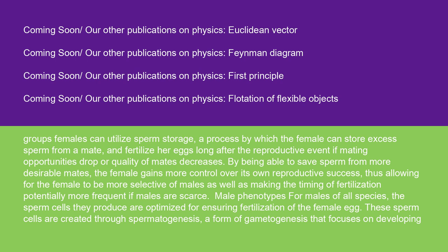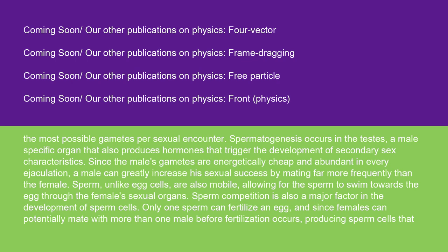Male phenotypes: for males of all species, the sperm cells they produce are optimized for ensuring fertilization of the female egg. These sperm cells are created through spermatogenesis, a form of gametogenesis that focuses on developing the most possible gametes per sexual encounter. Spermatogenesis occurs in the testes, a male-specific organ that also produces hormones that trigger the development of secondary sex characteristics. Since the male's gametes are energetically cheap and abundant in every ejaculation, a male can greatly increase his sexual success by mating far more frequently than the female. Sperm, unlike egg cells, are also mobile, allowing them to swim towards the egg through the female's sexual organs.